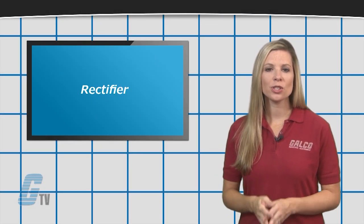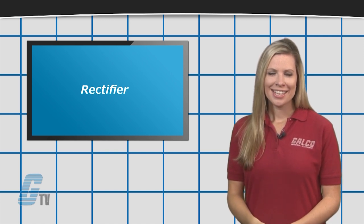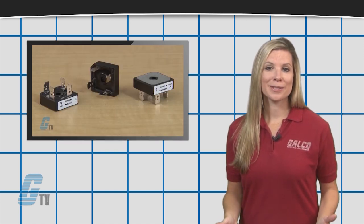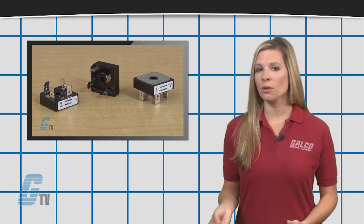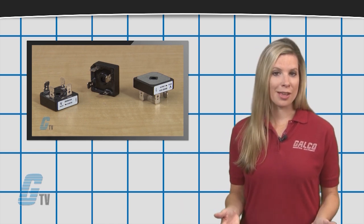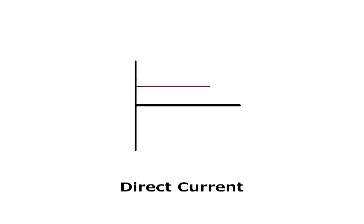A rectifier is used to convert AC power to DC. Typically a rectifier is composed of diodes that allow current to flow in one direction and not the other. Since alternating current periodically reverses direction, preventing this change of direction forces the current to only go in one direction, such as in direct current.